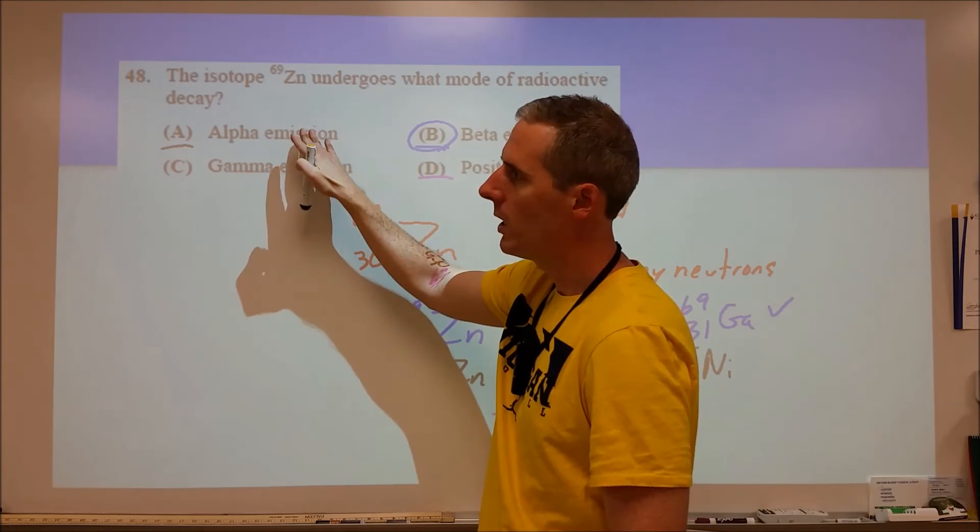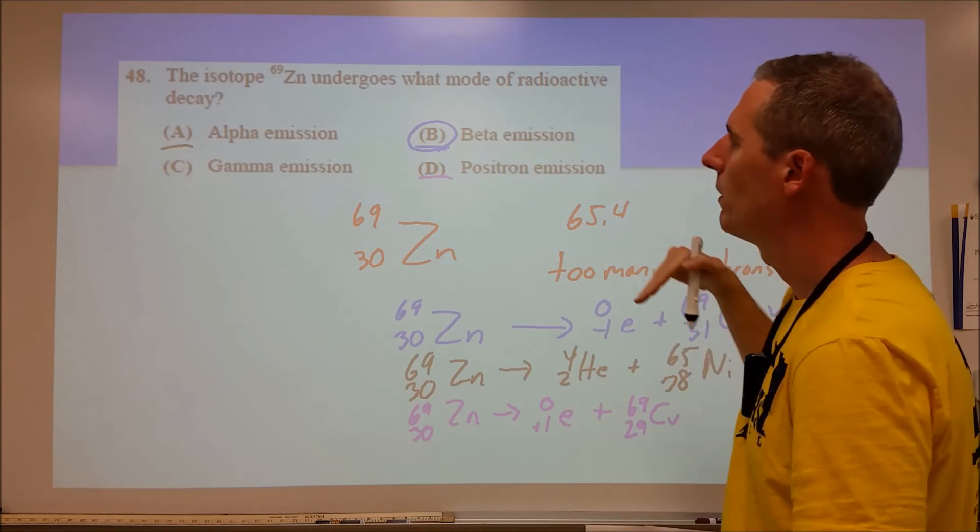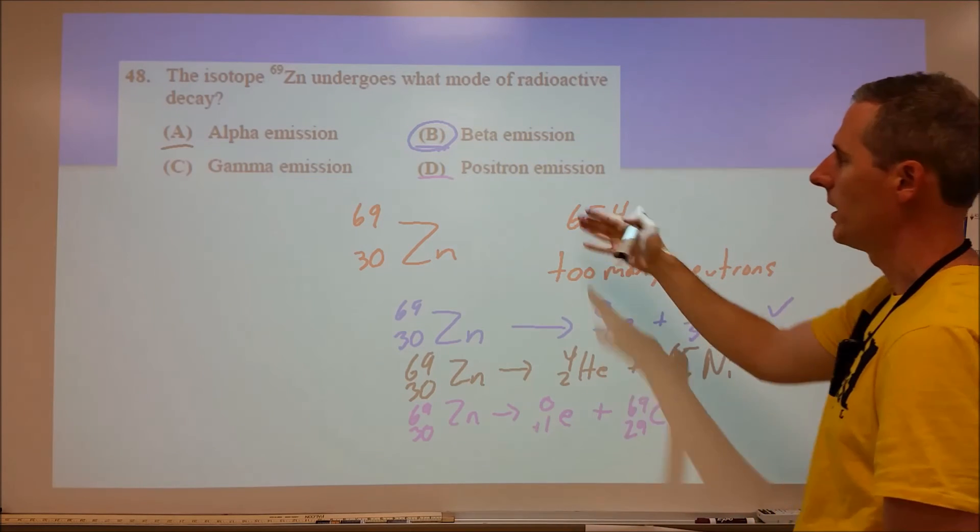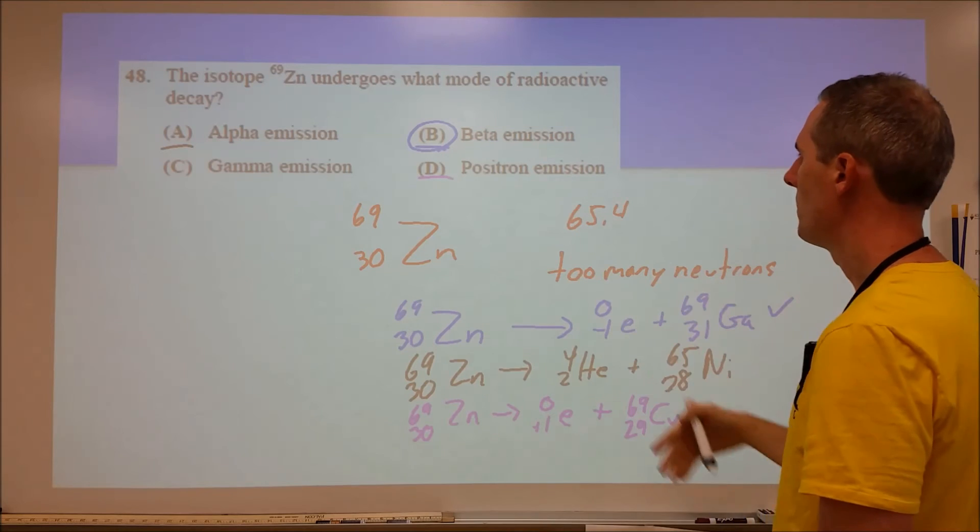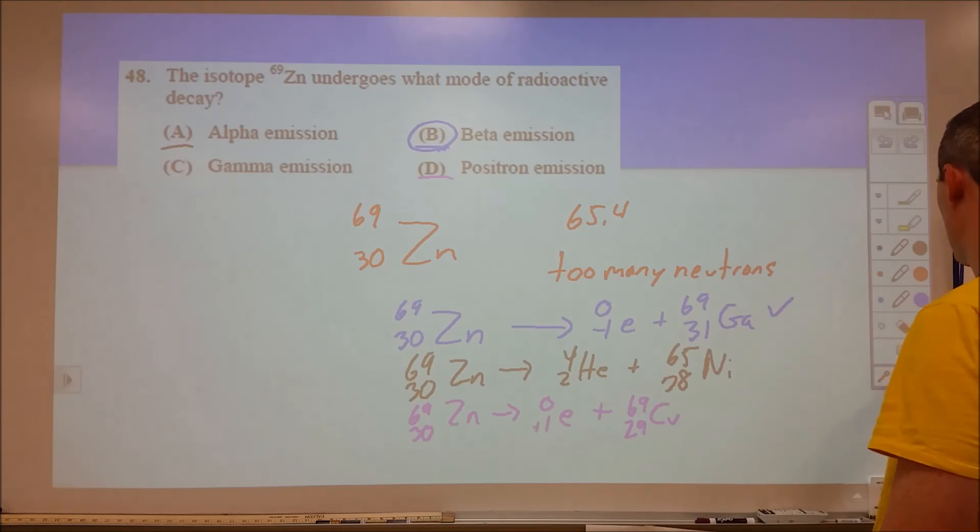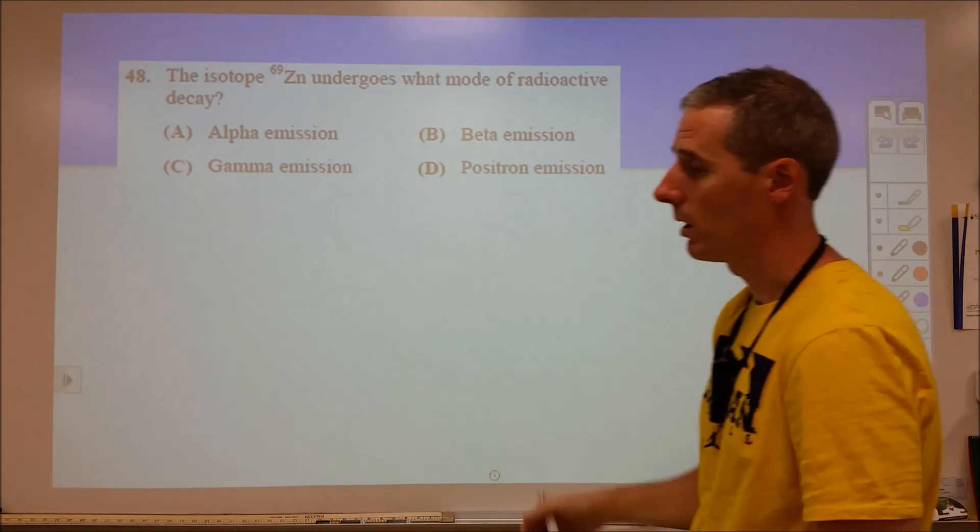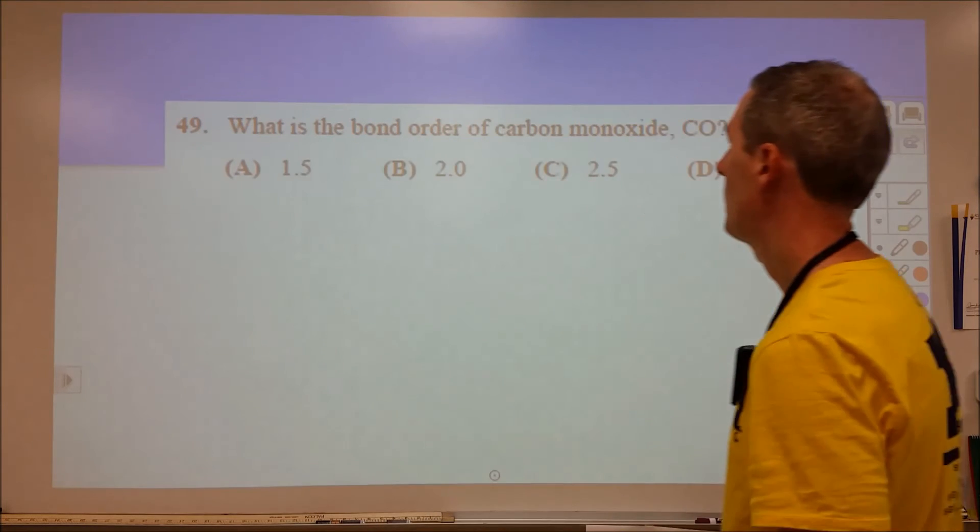You're going to look for things like uranium, thorium, anything in that lead chain for alpha particles, and then iodine, carbon 14, you're looking at beta, or if you have too many neutrons. If you have too many protons, you may want to go with something like positron or electron capture.